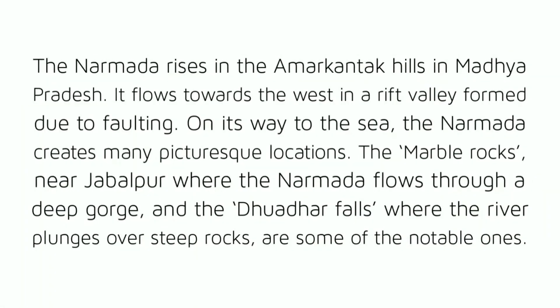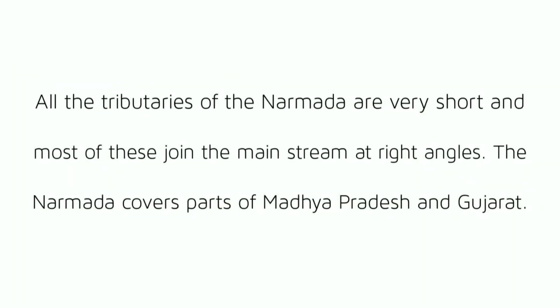The Narmada Basin: The Narmada rises in the Amarkantak Hills in Madhya Pradesh. It flows towards the west in a rift valley formed due to faulting. On its way to the sea, the Narmada creates many picturesque locations — the marble rocks near Jabalpur, where the Narmada flows through a deep gorge, and the Dhuandhar Falls where the river plunges over steep rocks, are some of the notable ones. All the tributaries of the Narmada are very short and most join the mainstream at right angles. The Narmada covers parts of Madhya Pradesh and Gujarat.